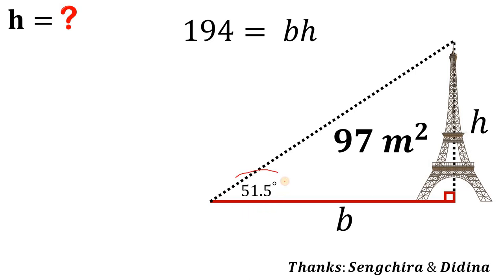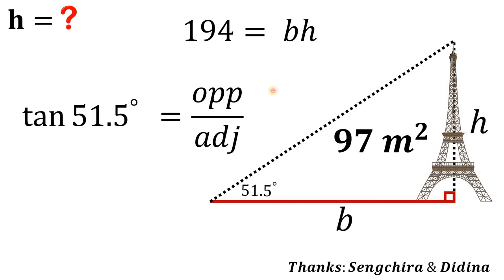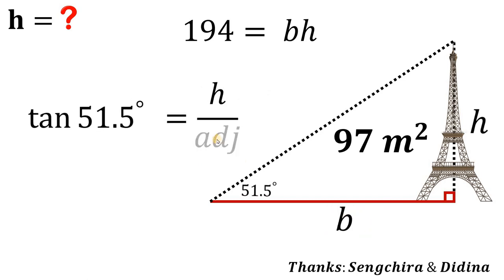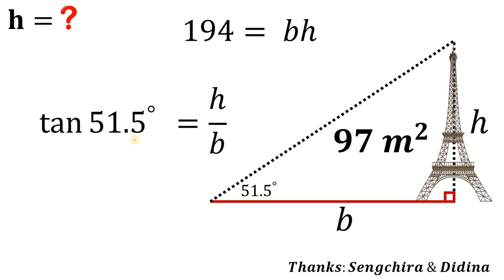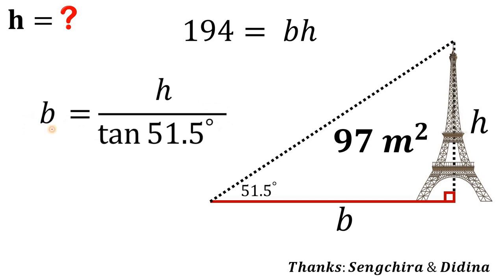Now we will use the other given in this figure, which is the 51.5-degree angle. Let's relate this angle to the height we want to find and the base. The tangent function comes to mind: tangent of theta equals the opposite side over the adjacent side. We know theta is 51.5 degrees, the opposite side is H, and the adjacent side is the base B. We then multiply both sides by B and divide both sides by tangent of 51.5 degrees, giving us B equals H over tangent of 51.5 degrees.